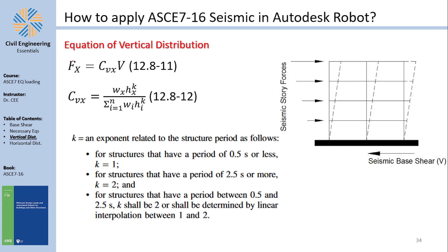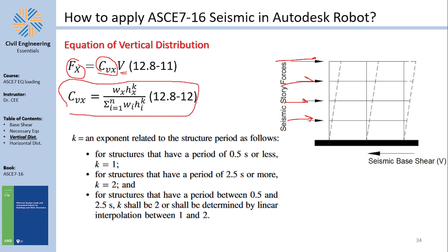The equations say basically that the force on a story is a fraction of the total base shear. CVX is a coefficient that calculates what fraction of the base shear each story receives. This equation looks intimidating but is actually easy to understand. The coefficient for the story shear — say 10%, 20%, and so on — depends on the ratio of the story's weight and height divided by the total of all story weights and heights.